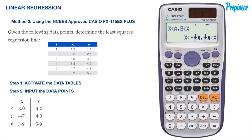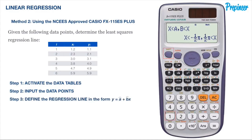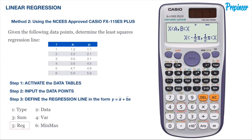We can now define the variables of the regression line. With all of our data points input into the calculator, it will now do all the dirty work for us. To do this, click the shift button and then the one button to activate the stat distribution functionality, indicated in yellow. You'll be brought to a menu that looks similar to this. Press 5 to select option 5 for regression.